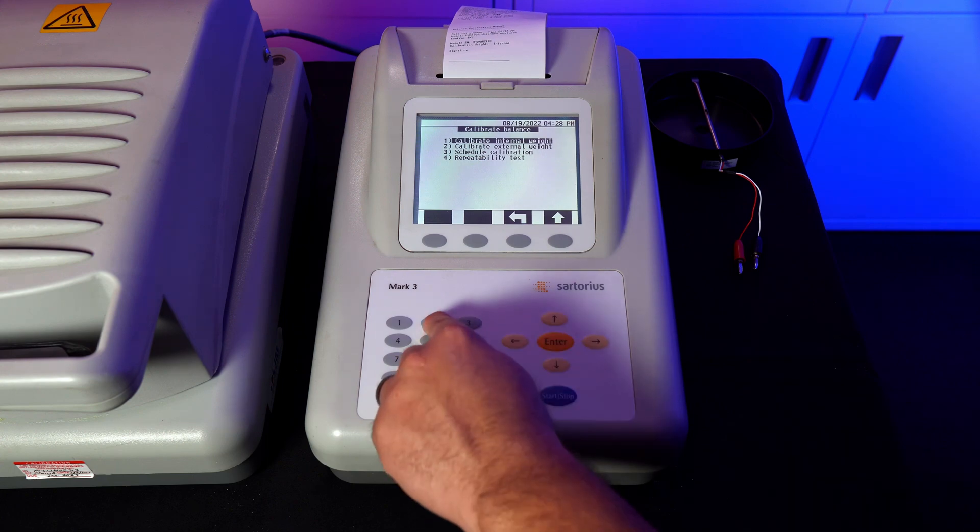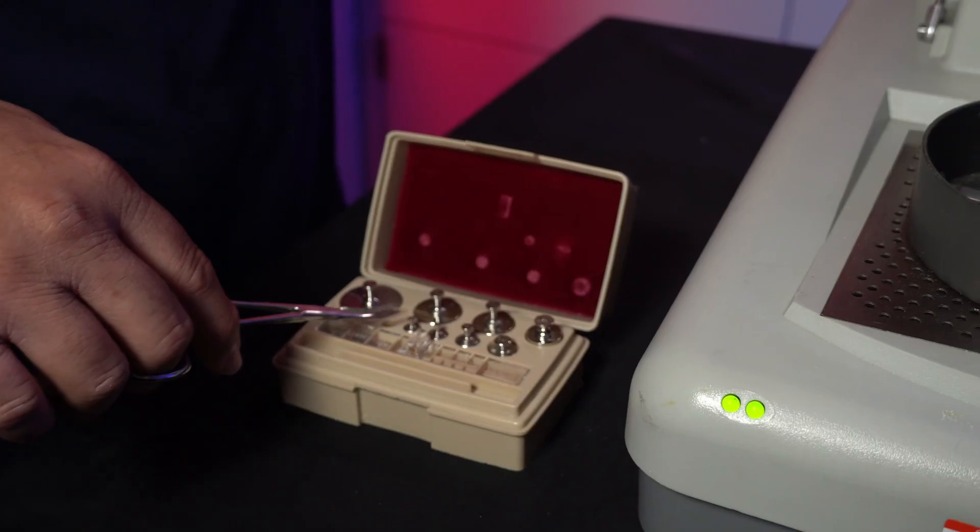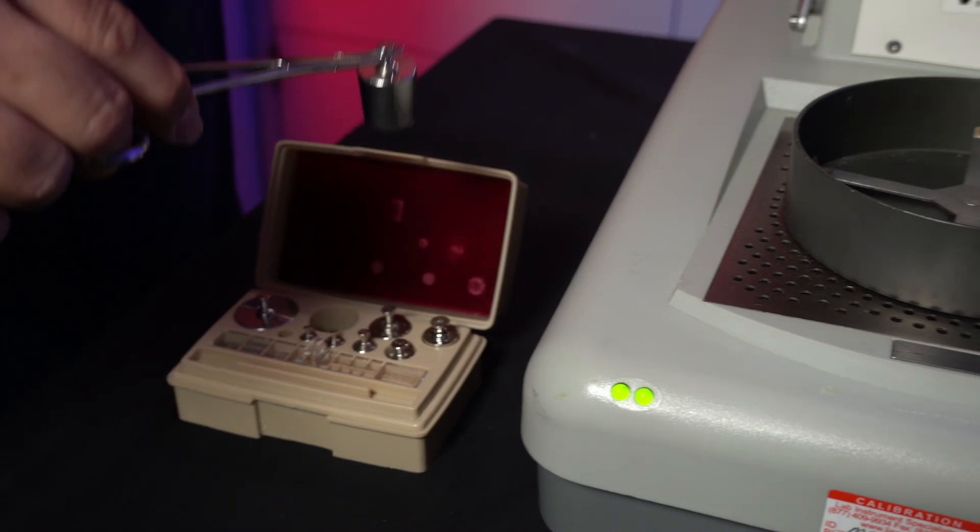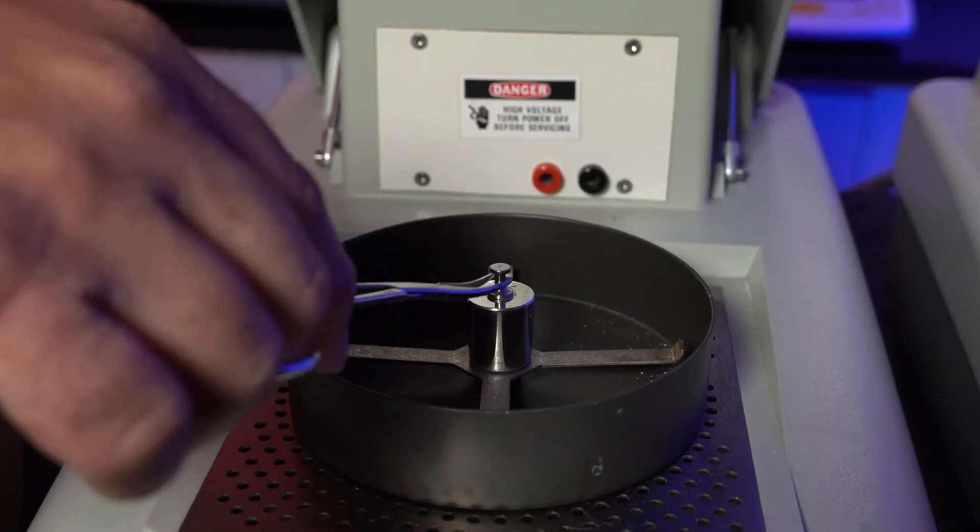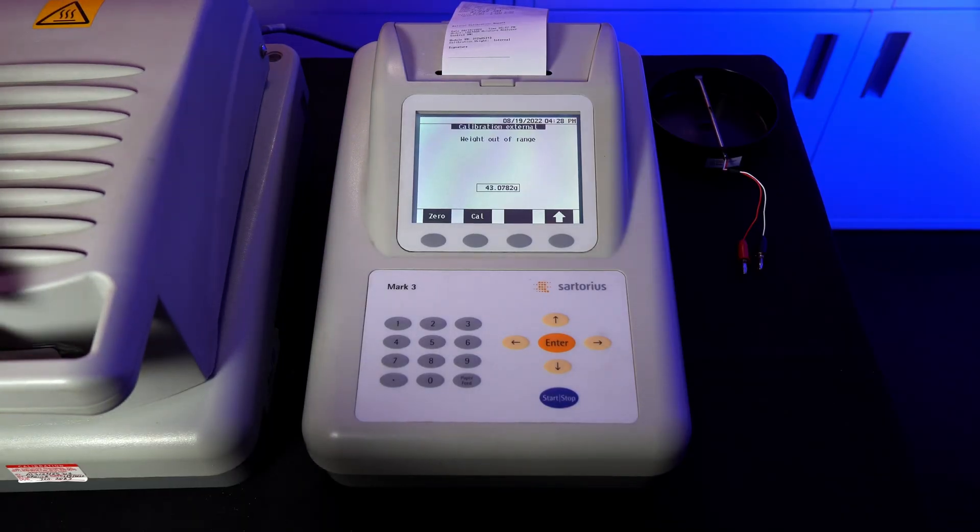Hit 2 for calibrate balance, hit 2 for calibrate external weight. When ready, open the lid and place the weight of your choice. We'll be using a 50 gram weight. Close the lid and the calibration will begin automatically.